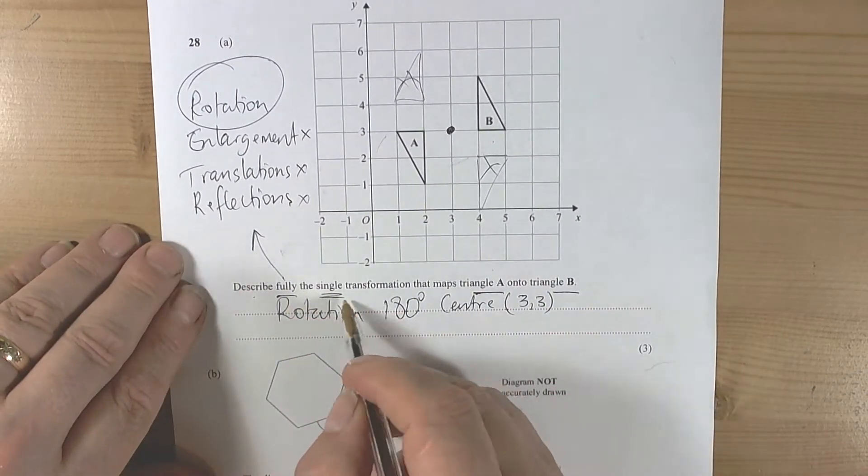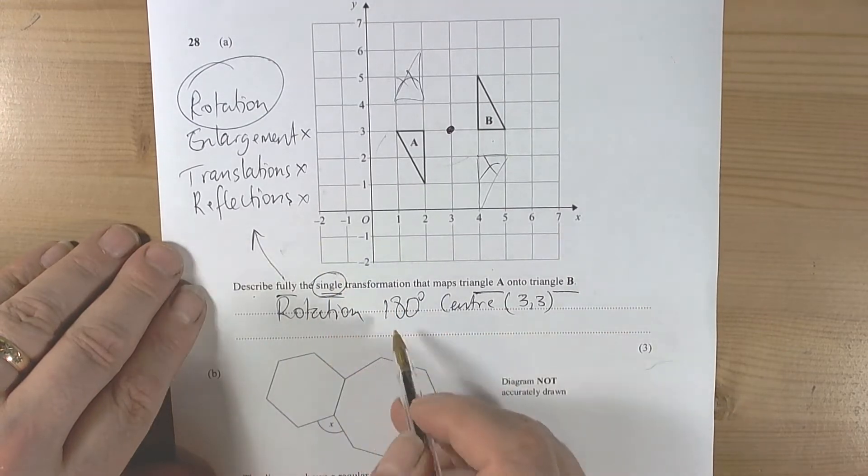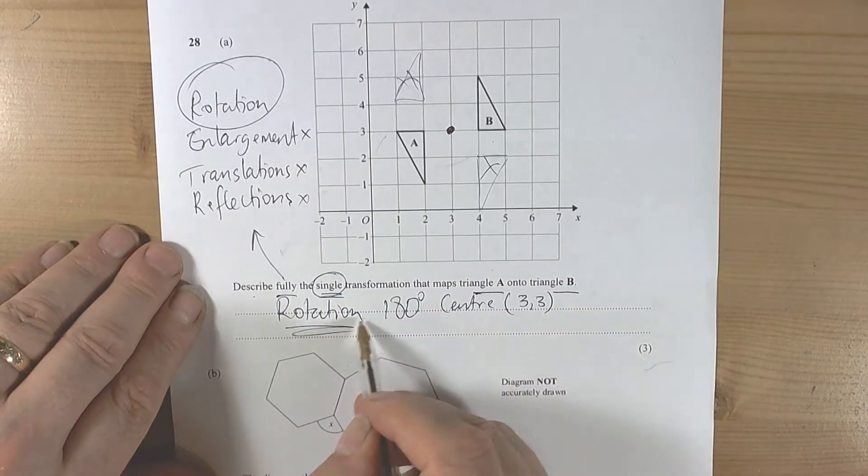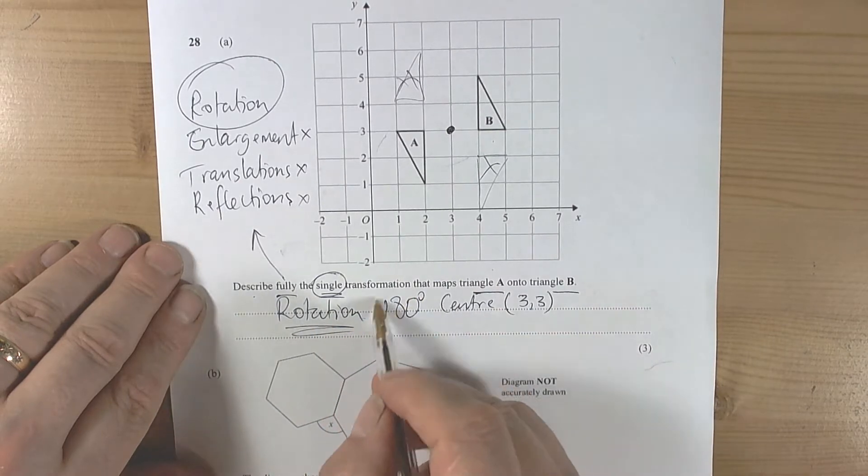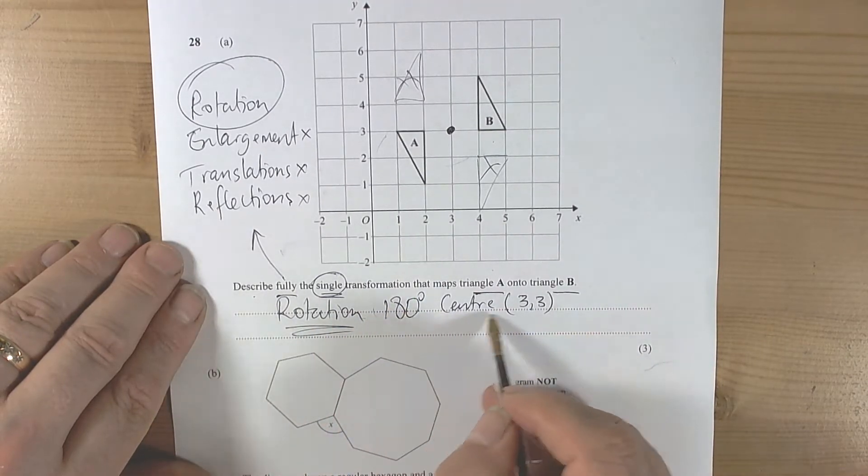We're going to describe fully the single transformation. Be careful, it's about a single transformation. Once we know it's a rotation, we need an angle and a direction, and we need a center.